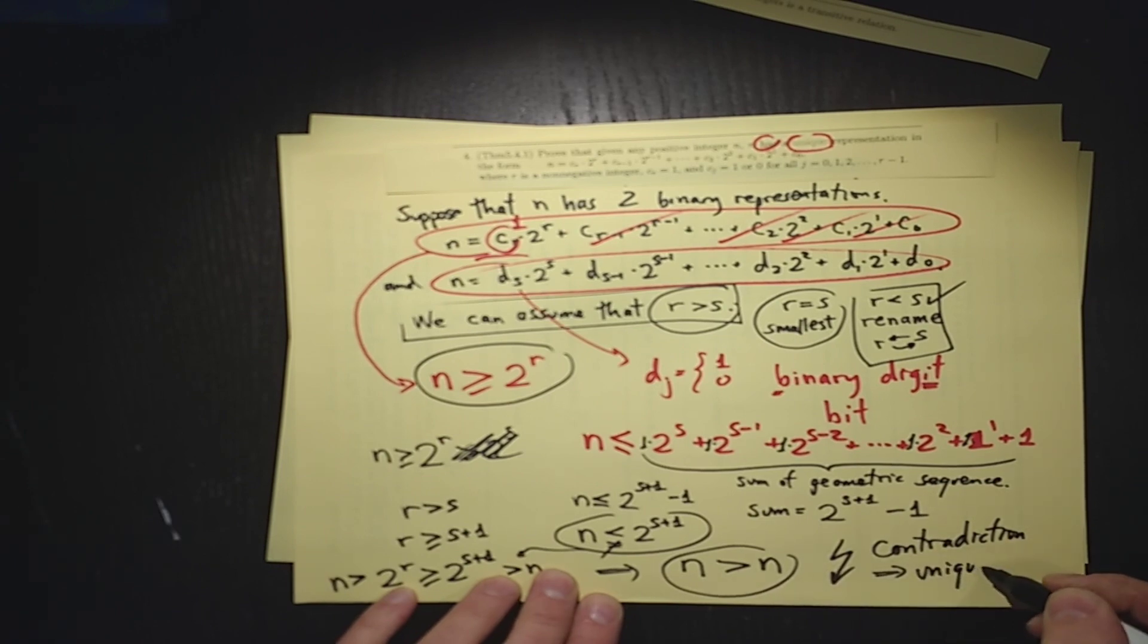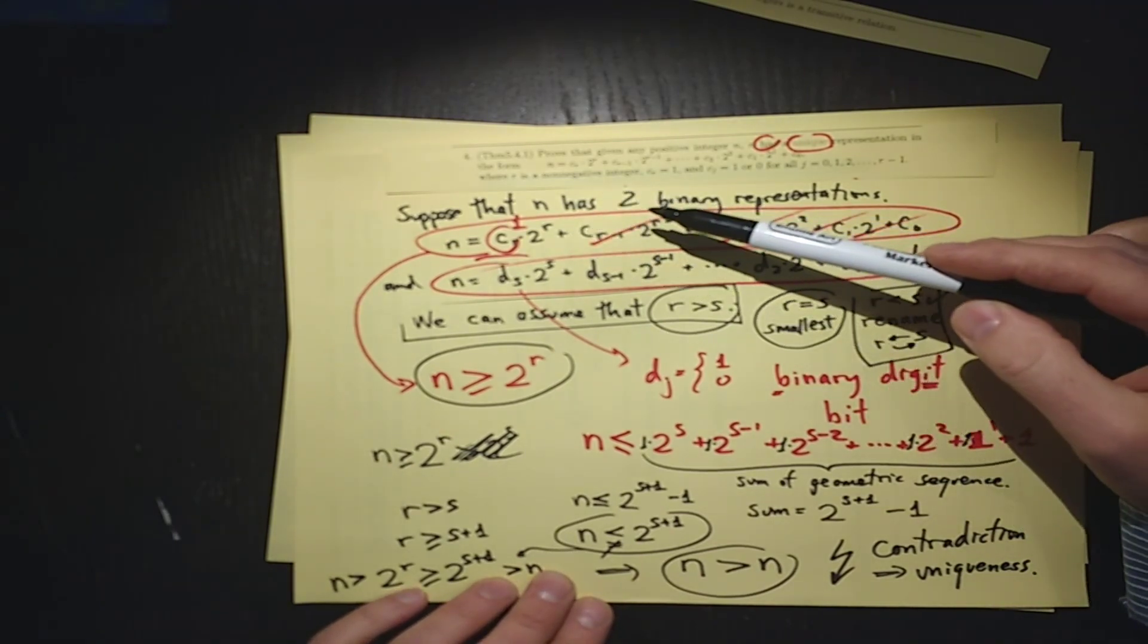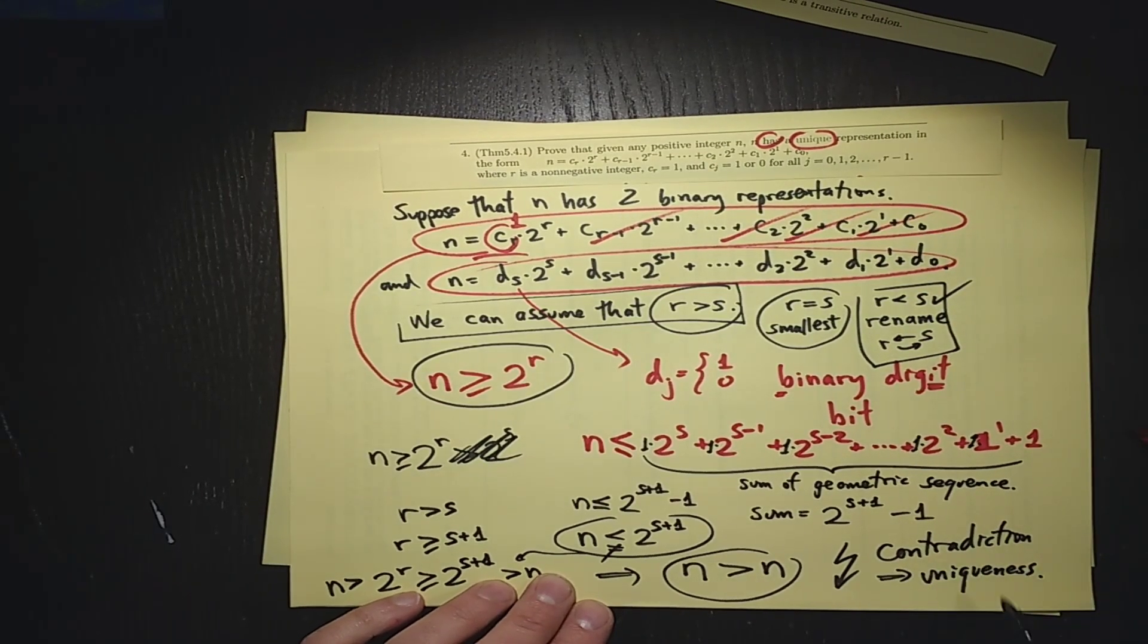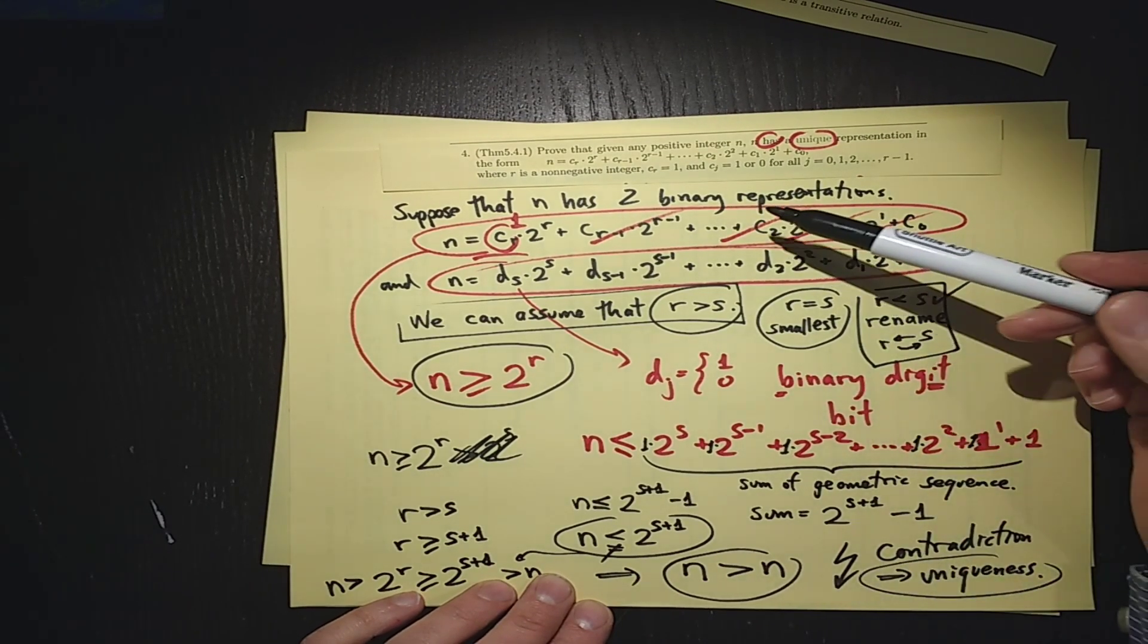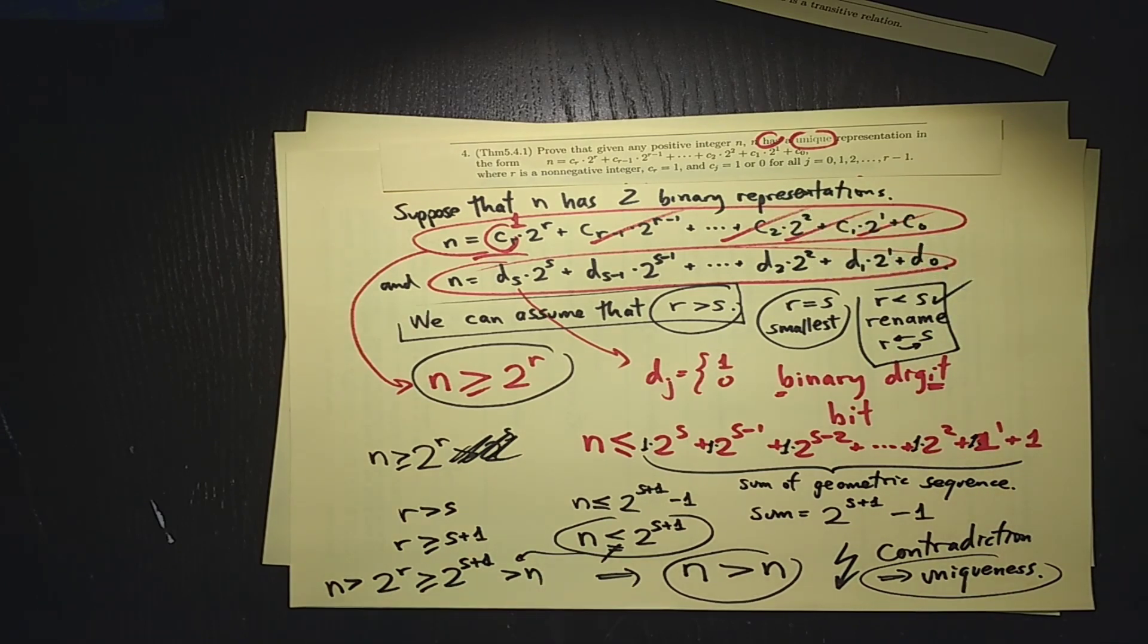So we've concluded uniqueness. We suppose that there's an integer that has a non-unique binary representation, and we derived a contradiction. That means that that assumption led to a contradiction, it must always be the case that every positive integer does have a unique representation. Okay, let's look.